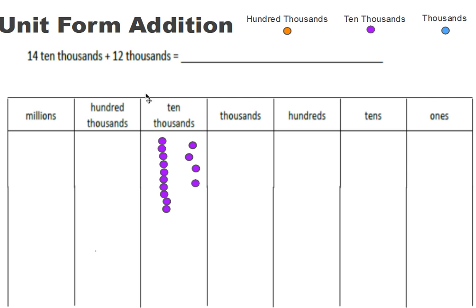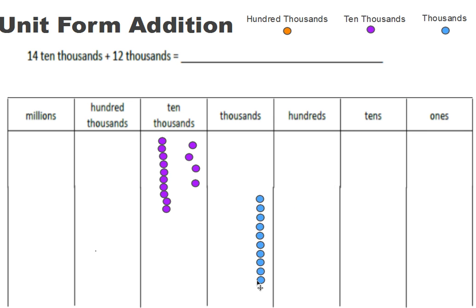Now I need to show twelve thousands. So down here I'm going to put twelve into the thousands column: ten, eleven, twelve.